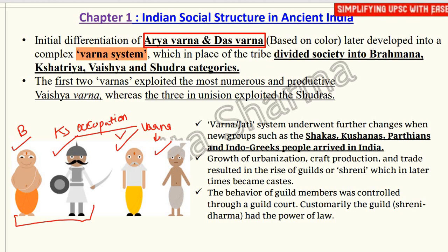After the Vedic civilization, exploitation started because the system was misinterpreted. The first two varnas — Brahmin and Kshatriya — exploited the most numerous and productive Vaishya varna, while these three in unison exploited the Shudra varna. The Varna and Jati system underwent further changes when new groups like Shakas, Kushans, Parthians, and Indo-Greeks arrived in India.